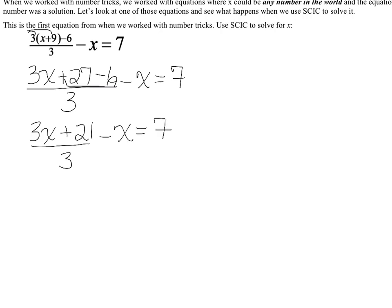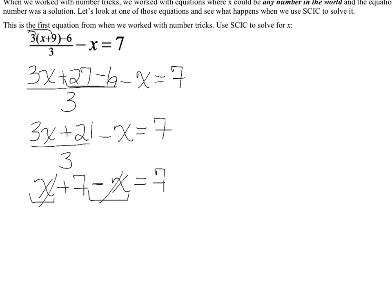We have (3x + 21) over 3, minus x, equals 7. Because 3x and 21 are both divisible by 3, let's simplify: 3x divided by 3 is x, and 21 divided by 3 is 7. So I get x plus 7 minus x equals 7. Combining like terms, x minus x is 0, so the x's completely cancel out and I'm left with 7 equals 7.